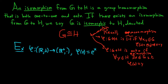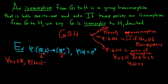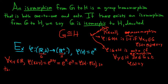Let's show that φ is an isomorphism, starting by showing it's a group homomorphism. For all x, y in ℝ, we look at φ(x + y) — the operation in G is addition. That equals e^(x+y) by definition of φ. Using properties of exponents, that's eˣ · eʸ, which equals φ(x) · φ(y). This shows φ is a group homomorphism.